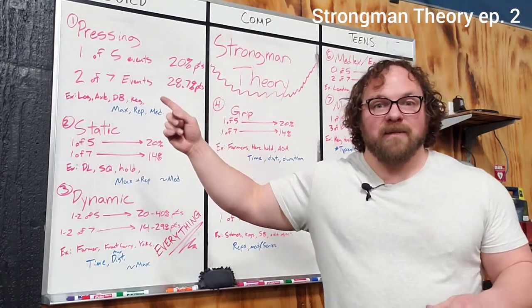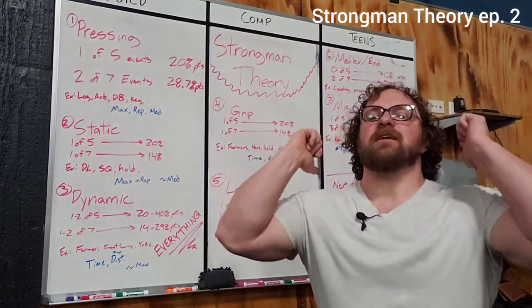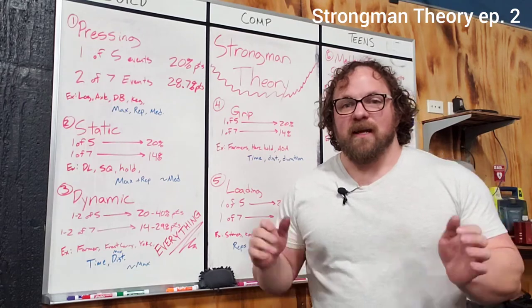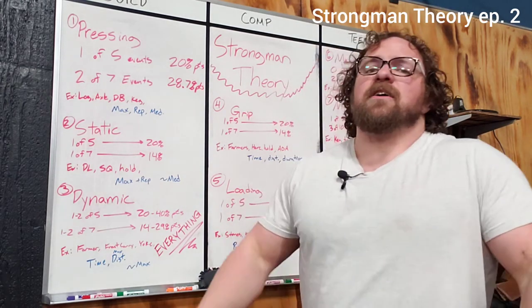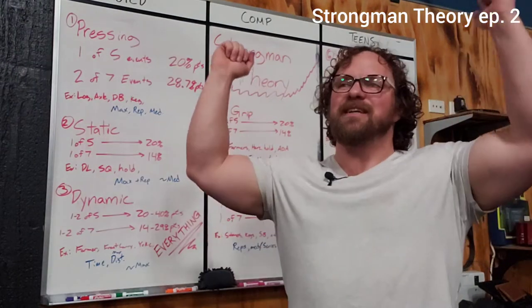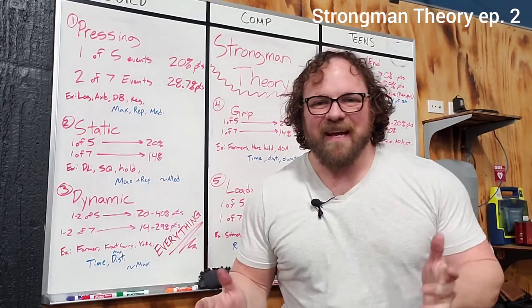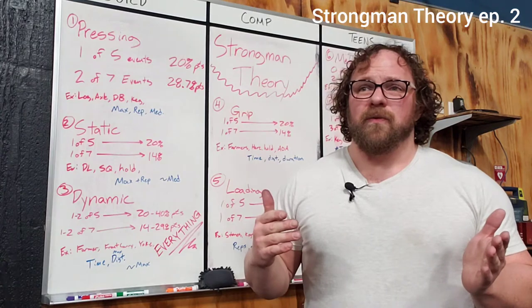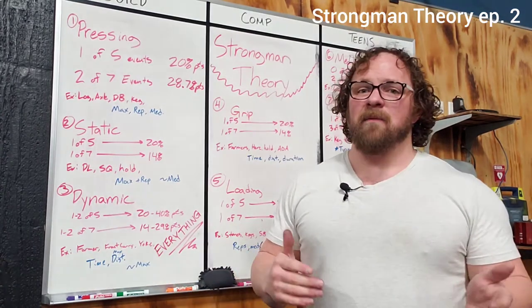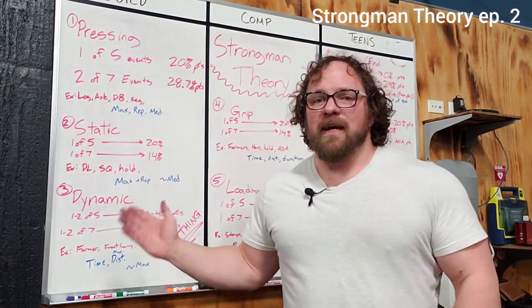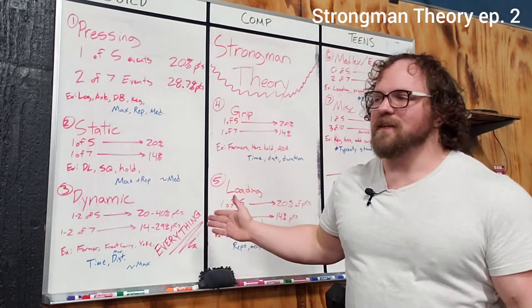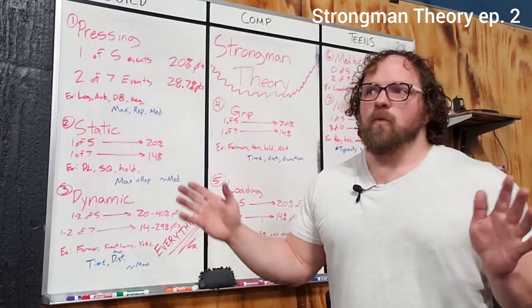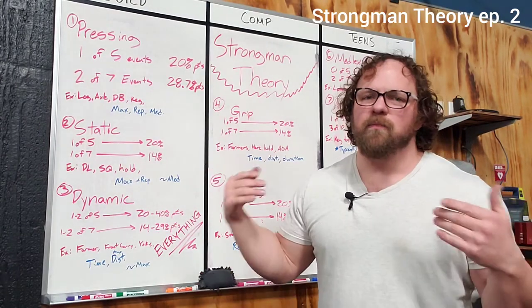For example, on a log max: if you clean and press the log and lock it out in three seconds total, versus someone who takes six to seven seconds — lapping it, pausing, then pressing with wobbling — they spent more than twice the time under tension. Even if they're stronger than you, they spent more energy. Dynamic efficiency pays dividends across every category of movement, and we'll cover that in depth in future category-specific videos.